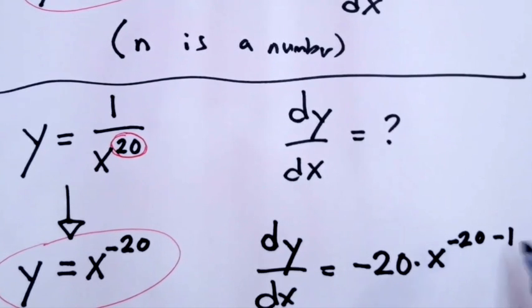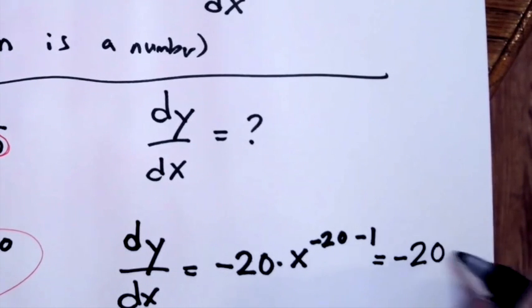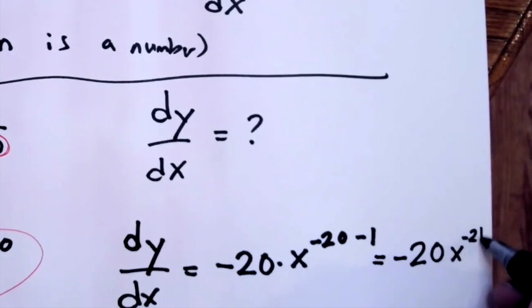To simplify this further, I could simplify it as negative 20 times x to the negative 21.